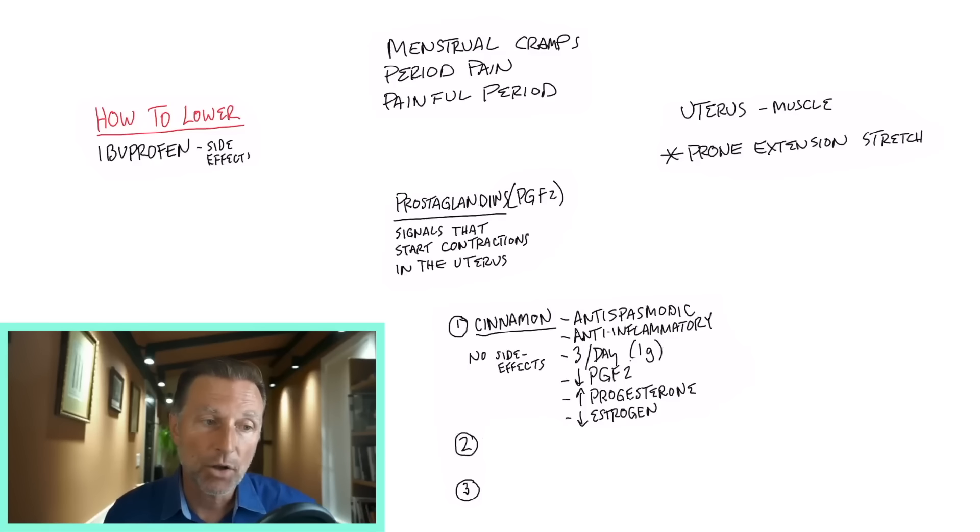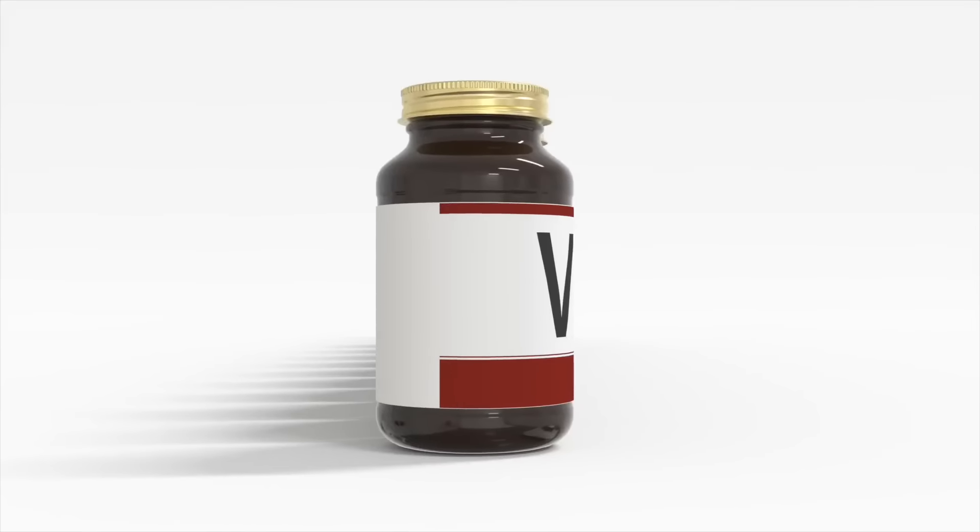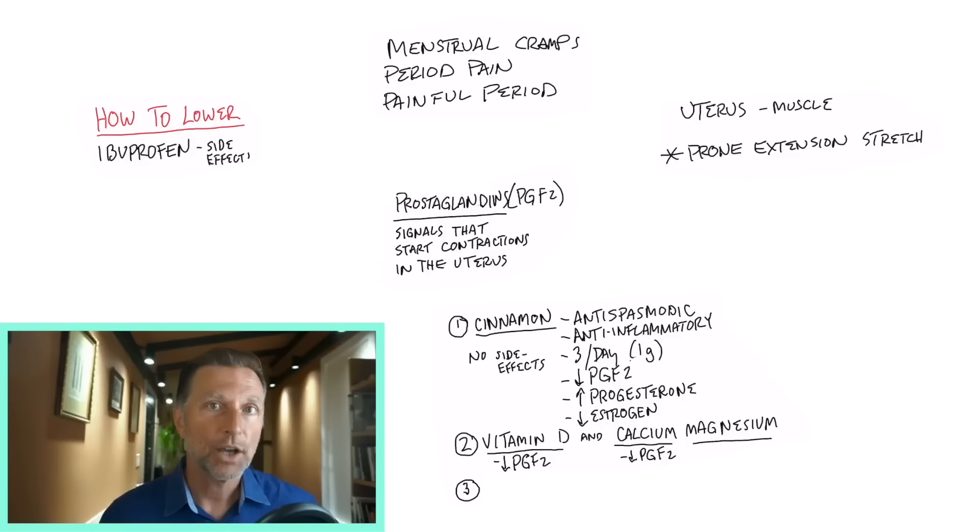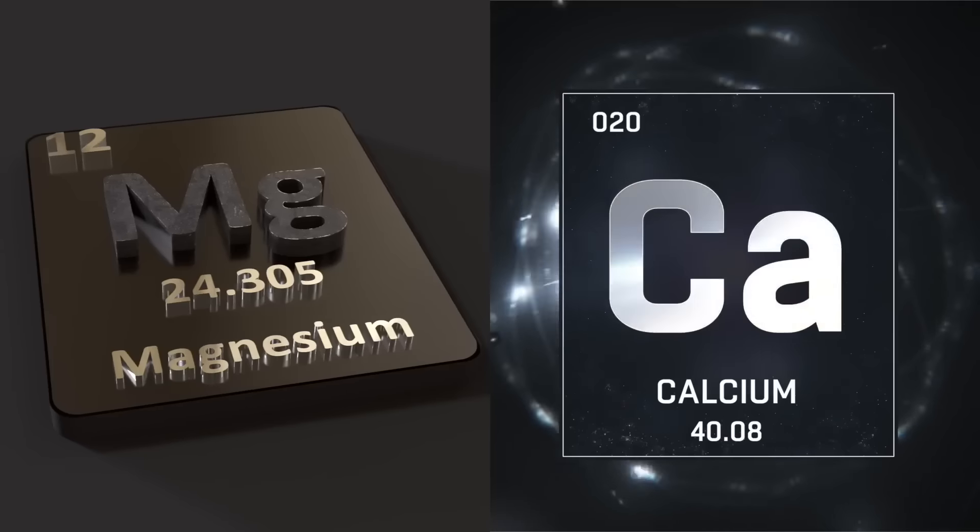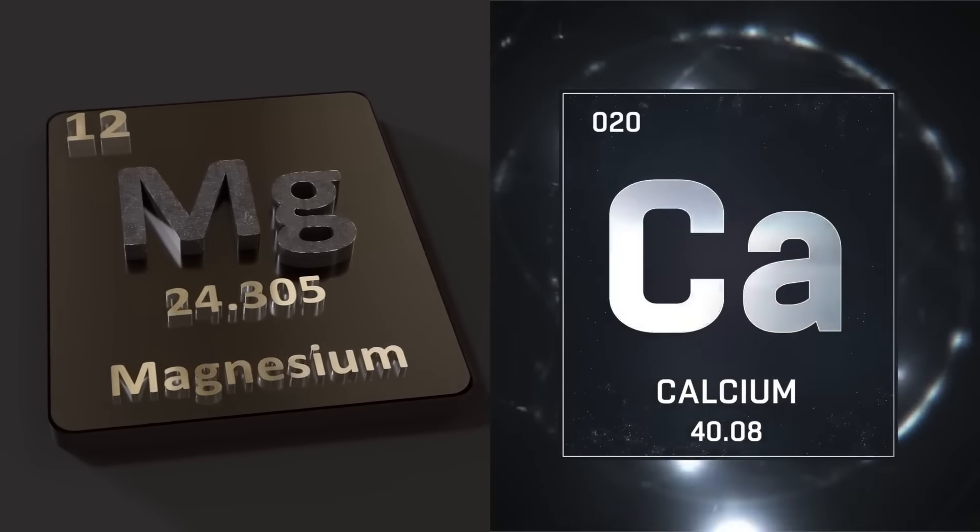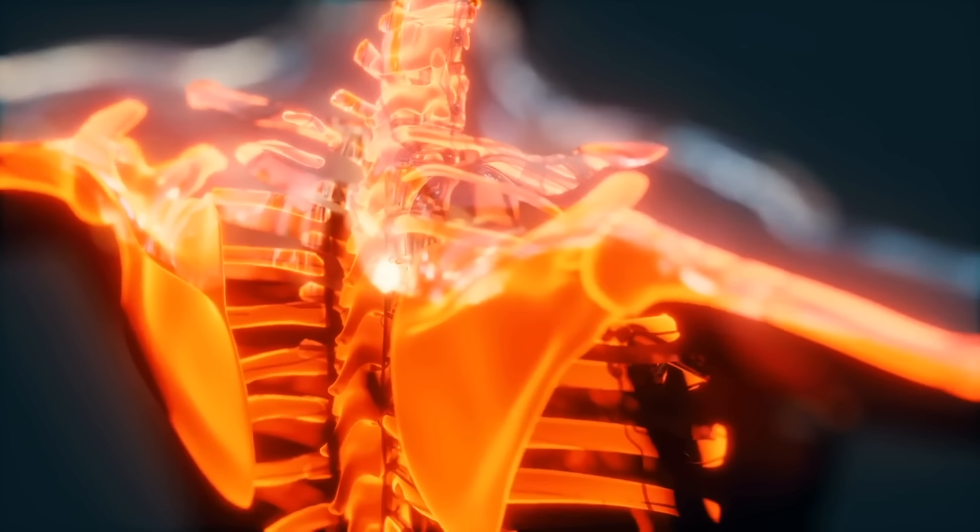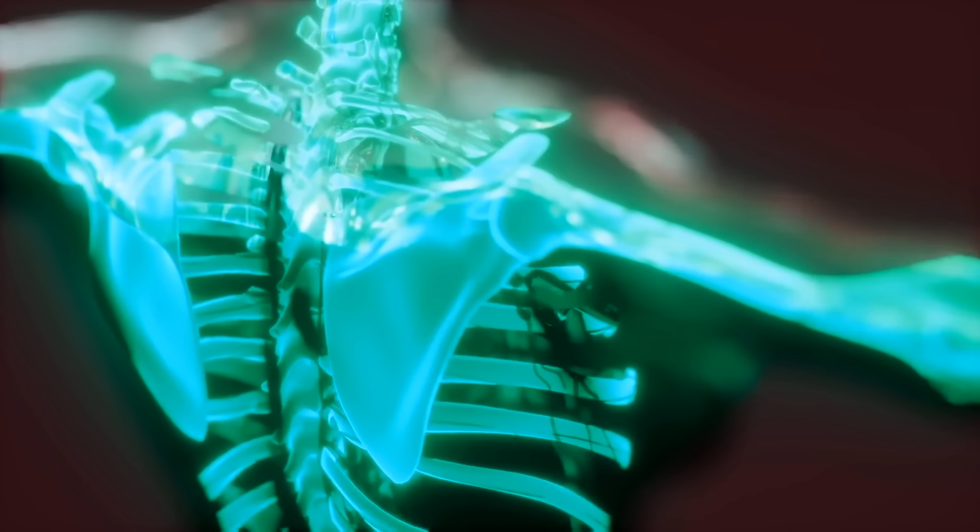A couple other things that I recommend that also will directly inhibit prostaglandins. Vitamin D3, and I would take about 10,000 IUs three times a day throughout the day. At the same time, you're taking the cinnamon, as well as calcium and magnesium together. The vitamin D helps the absorption of the calcium and magnesium go into the tissues, helping to relax the spasm. Vitamin D is also a potent anti-inflammatory as well.